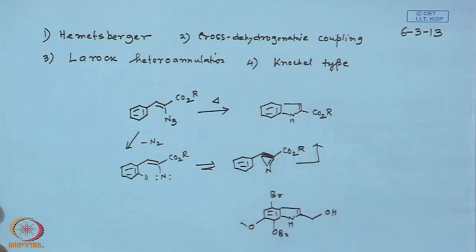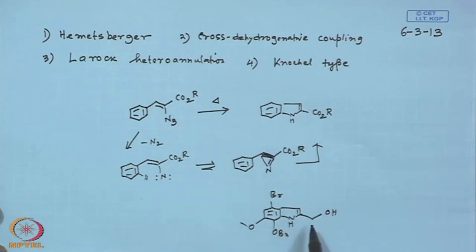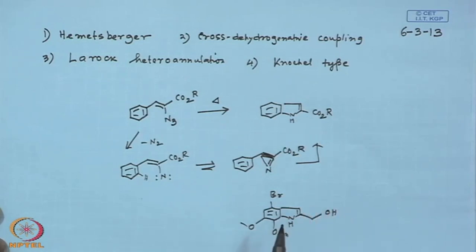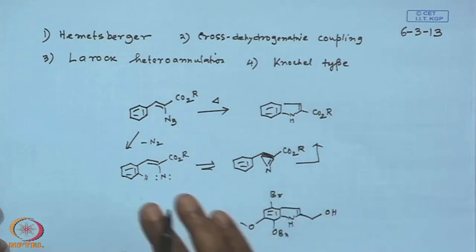If you look at the retrosynthesis, one would make a vinyl azide or azirine. What kind of azido styrene do we take? Doing little disconnection, you find you need an azido styrene with a CH₂OH functional group. However, you have to think whether that is really required, because a CH₂OH group during azide decomposition might undergo nitrogen insertion on the other side rather than forming the azirine intermediate.